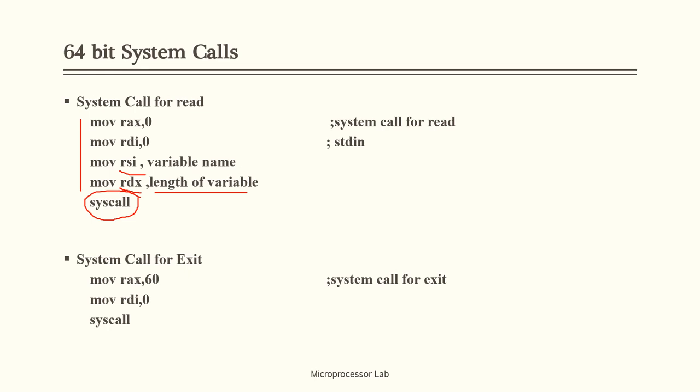The third system call we use in our program is the system call for exit. The parameters for the exit syscall are: RAX equal to 60, where 60 is the identity for the exit syscall; RDI equal to 0; and then the syscall instruction, which executes the system call for exit.